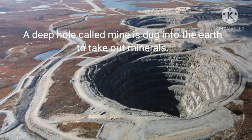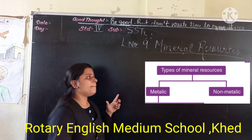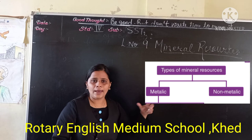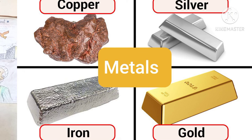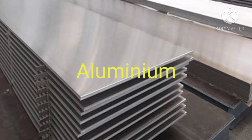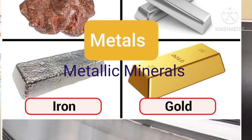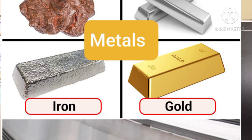There are two types of minerals: metallic minerals and non-metallic minerals. Things like iron, copper, gold, silver, and aluminium are metals — these are called metallic minerals. Minerals from which metals are obtained are called ores.